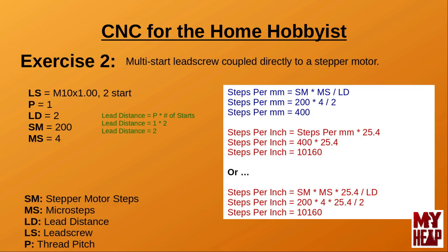In this example, let's assume that we have an M10 by 1, two-start lead screw, and the majority of our tooling is in metric. The metric lead screw has a pitch of one millimeter between the thread crests, but the screw has two starts, or threads. The distance the nut will travel is the number of starts times the pitch of the screw, so the nut will travel 2 millimeters per revolution of the screw. To calculate the steps per millimeter, we take the steps to rotate the motor one revolution and divide by the lead of the screw. So, 800 divided by 2 equals 400 steps per millimeter.